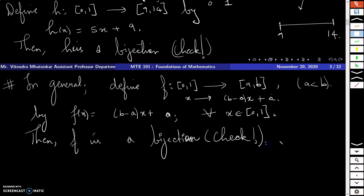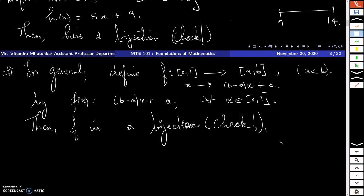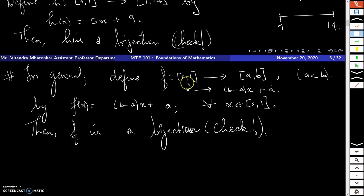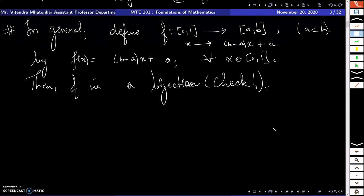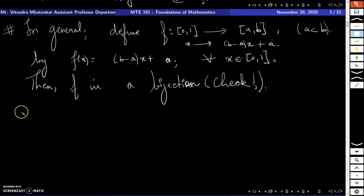We have already seen how to check whether a function is bijective. So finally what we have shown is that closed interval [0,1] is bijective with any other closed interval [a,b], provided a < b. Since f is a bijection, it has an inverse, which is a map from [a,b] to [0,1], and we have already seen that the inverse is also a bijection. That means we can find a bijection from any closed interval [a,b] to [0,1].